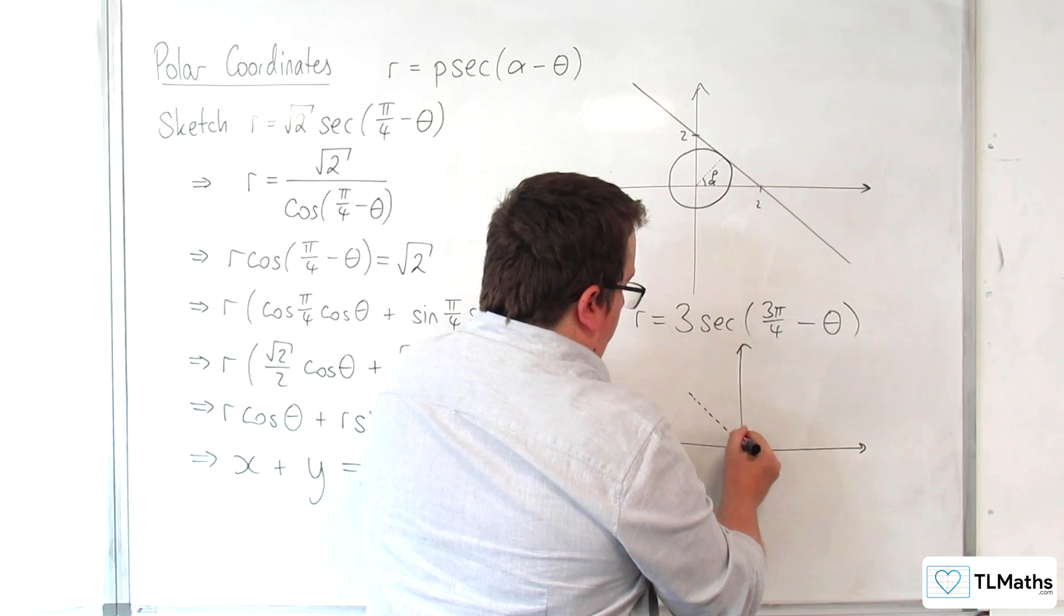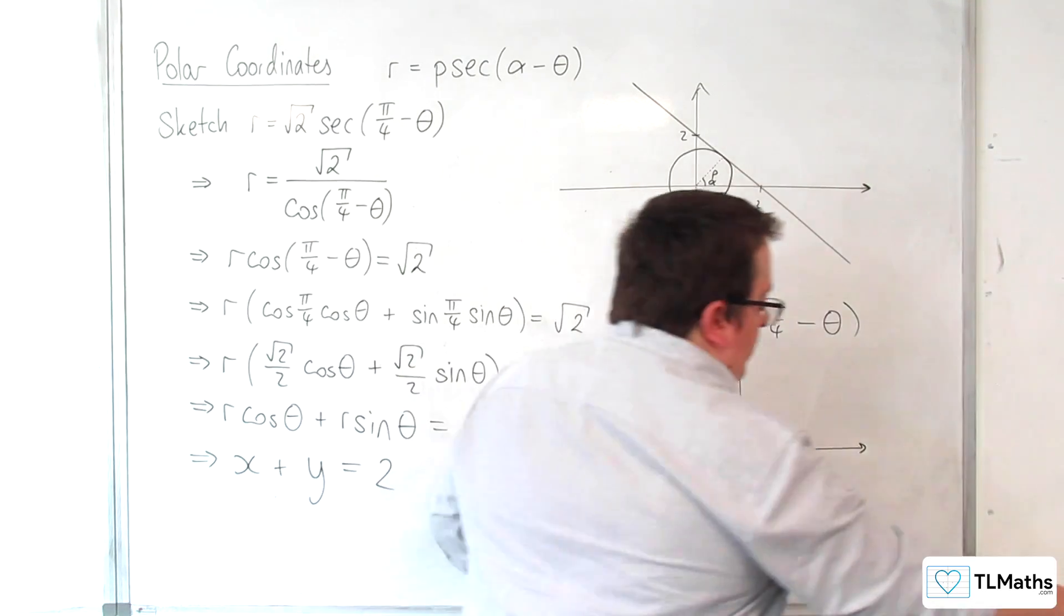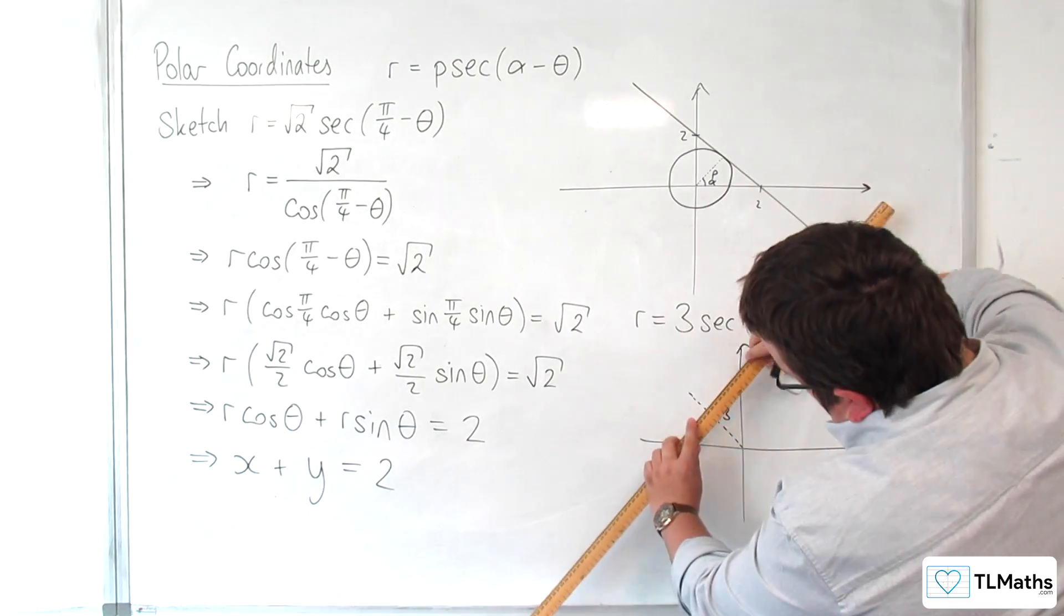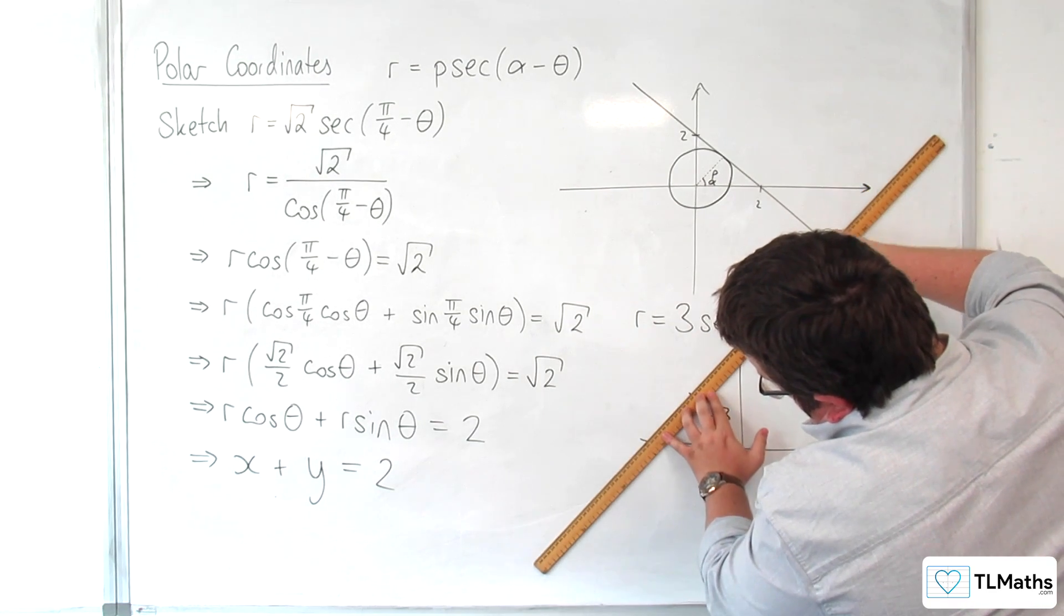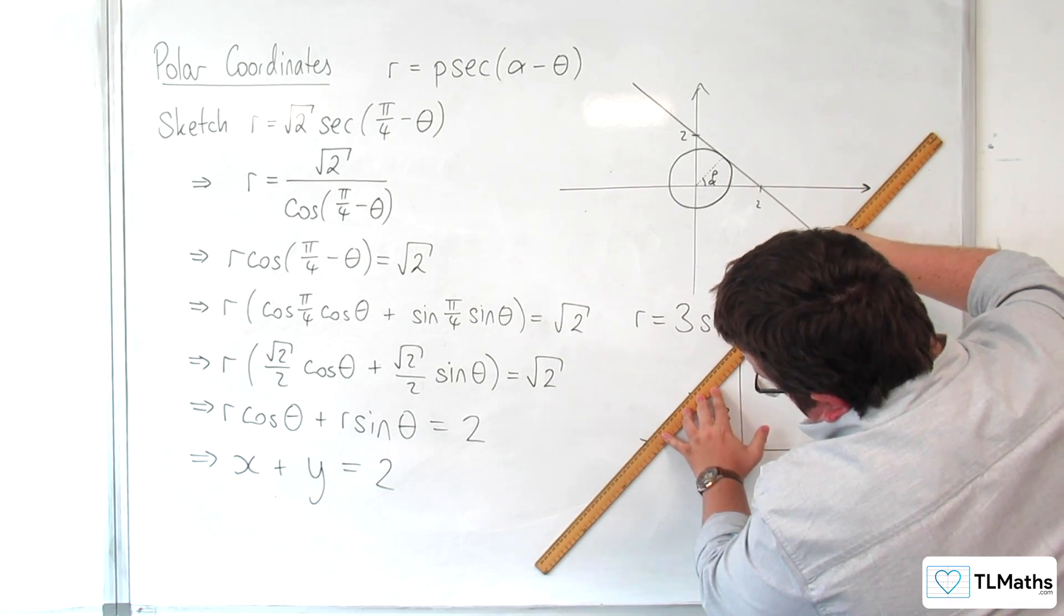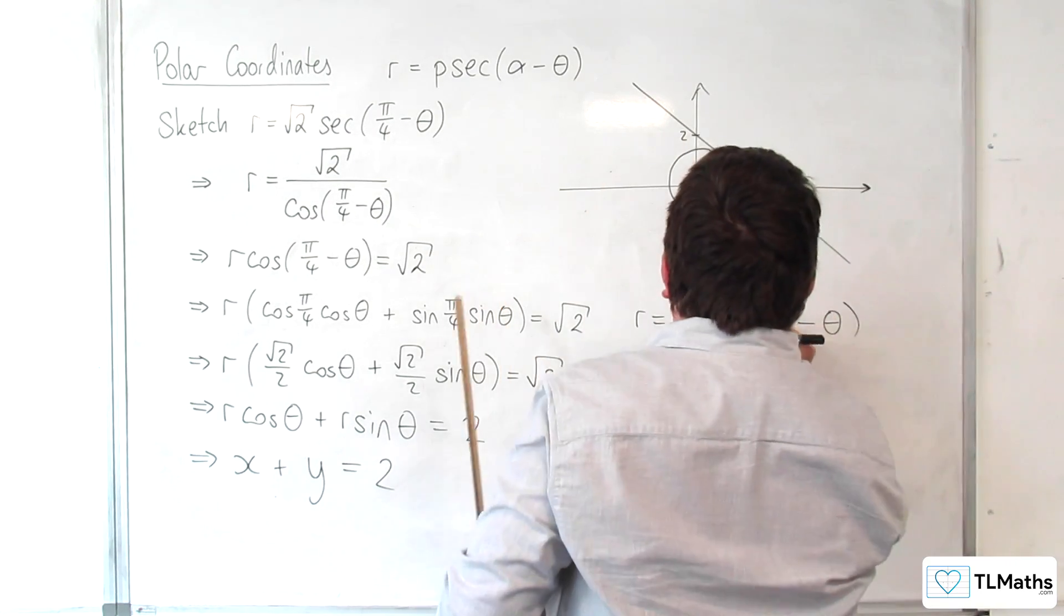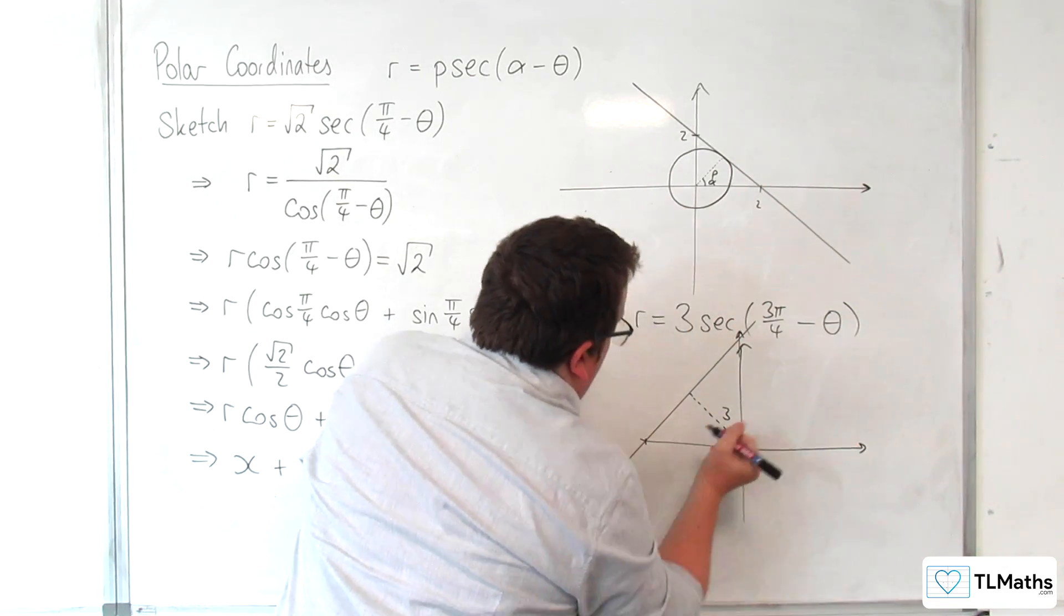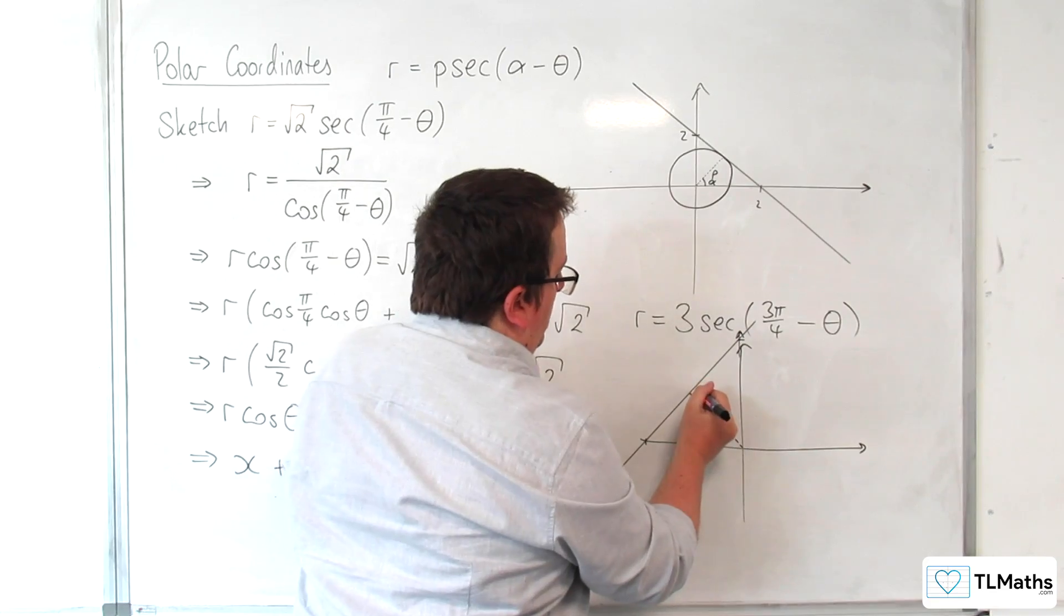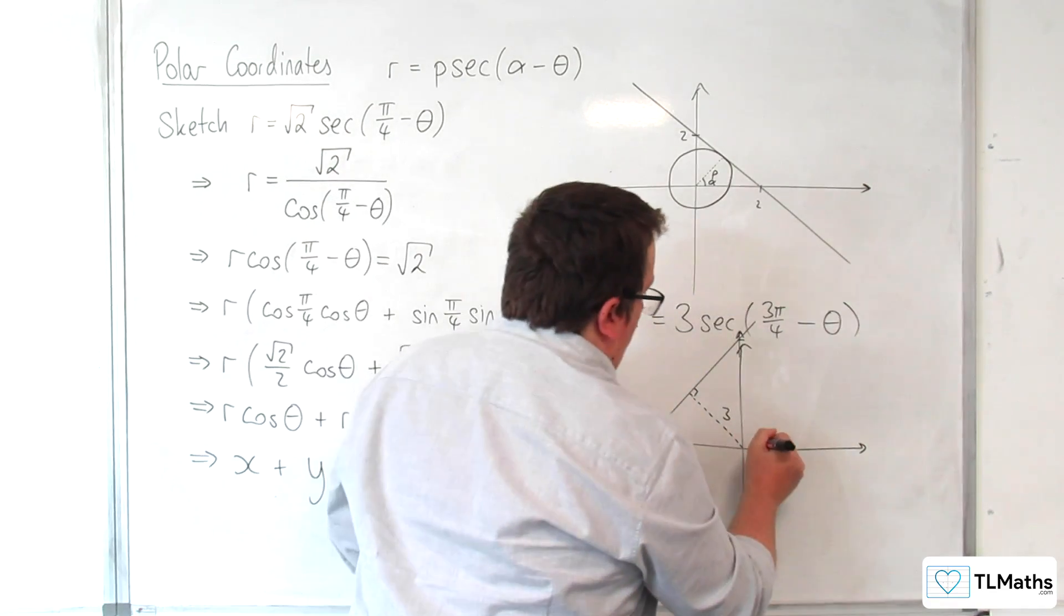So actually, that is the distance 3. And so it is a line perpendicular to that from the origin. Like so. Now, like that. And that's your 3 pi over 4.